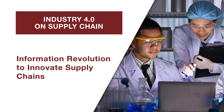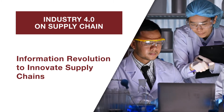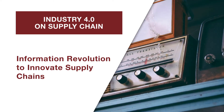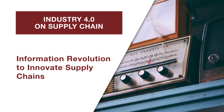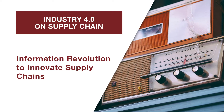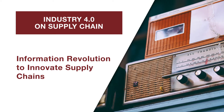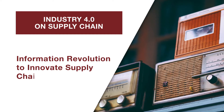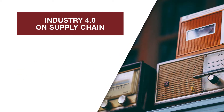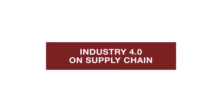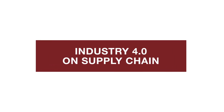Currently, much of this information processing — such as collection and sharing of information and use of that information for making decisions — involves human processing. Now replace the human task by automated information collection and sharing and algorithmic decision making, and we begin to get a sense of what Industry 4.0 might look like and how it could affect our supply chains.